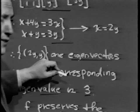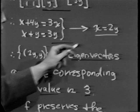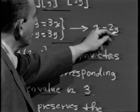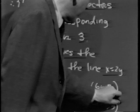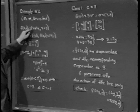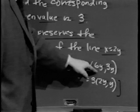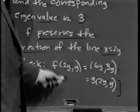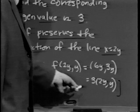Geometrically, x = 2y can be viewed as a line in the plane, and what this says is that f preserves the direction of the line x = 2y. As a quick check: f of (2y, y) gives (6y, 3y), which equals 3×(2y, y). The special case y = 1 corresponds to our earlier result that f-bar of (2, 1) equals 3×(2, 1).